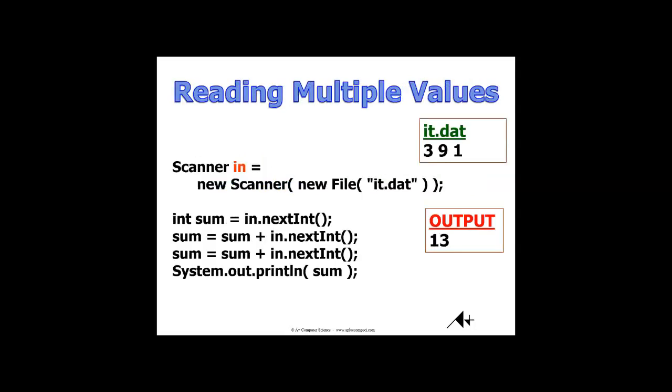And in this case, everything looks exactly the same as it did in the keyboard example, except now, instead of the values being typed in as the program's running, they were typed in beforehand and put in a file called it.dat. So in that file, I have 391. Whenever I create the scanner, I tell it to connect to that file, it.dat, and read those values in rather than reading in the values from the keyboard.